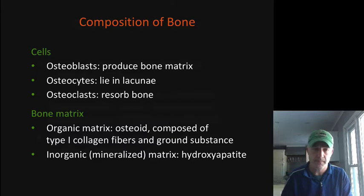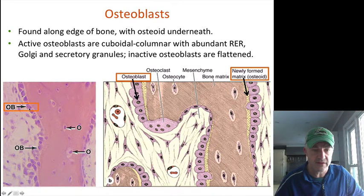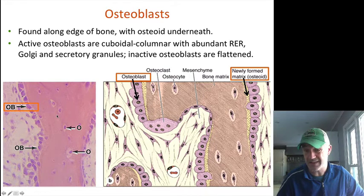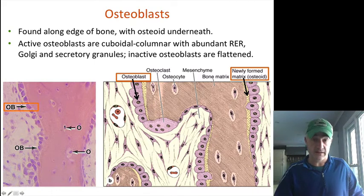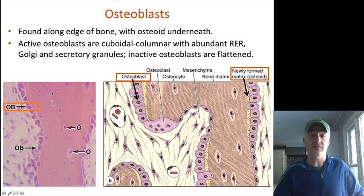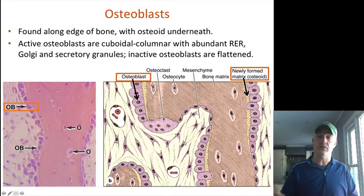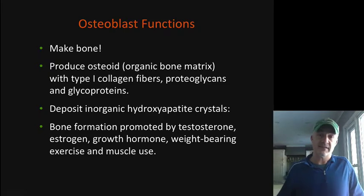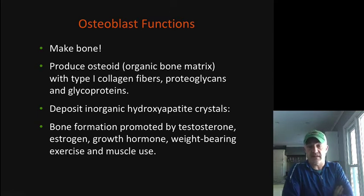Osteoblasts can be seen lining both the inside and outside of bone. In microscope images, they appear as squared-off cells lining the bone surface. Osteocytes are the ones trapped within the bone itself. In spongy bone for example, you can see osteoblasts lining the surface with osteocytes trapped within. The osteoblasts are actively forming bone while osteocytes have already been incorporated into the bony matrix.